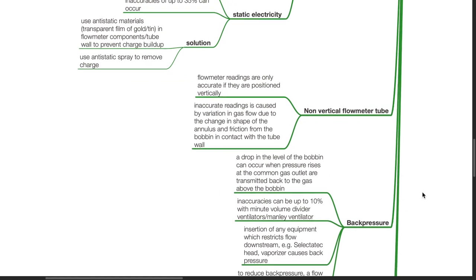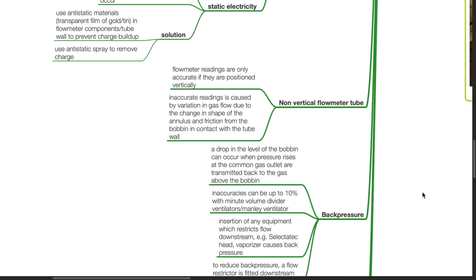Non-vertical flow meter tube: Flow meter readings are only accurate if they are positioned vertically. Inaccurate readings are caused by variation in gas flow due to the change in shape of the annulus and friction from the bobbin in contact with the tube wall.